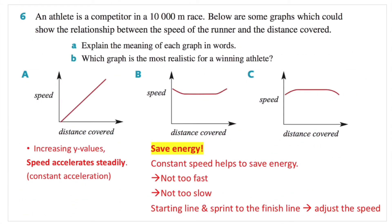Question six: an athlete is a competitor in a 10,000 metres race. Below are some graphs which could show the relationship between the speed of the runner and the distance covered. I only picked options A, B, and C because they're very interesting to look at. Importantly, in this question it's no longer time versus distance or time versus speed — it's distance versus speed. So on the horizontal axis we have distance covered, and on the vertical axis we have speed.